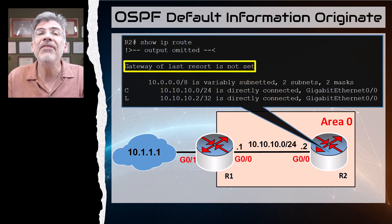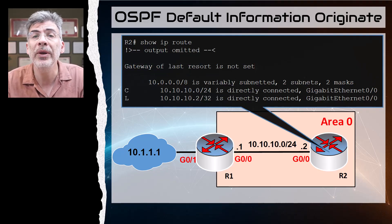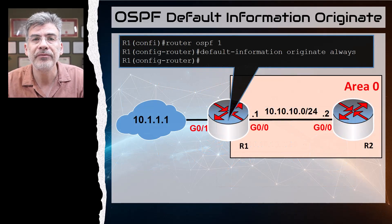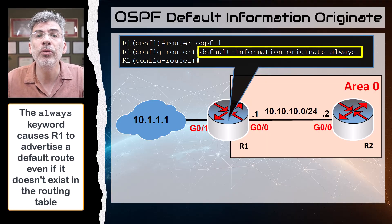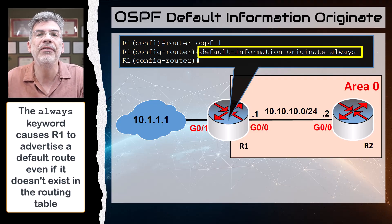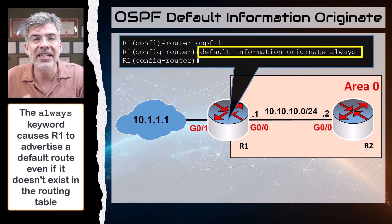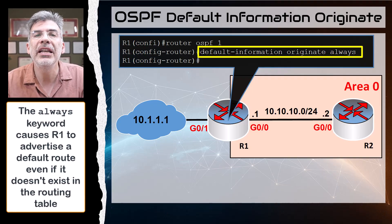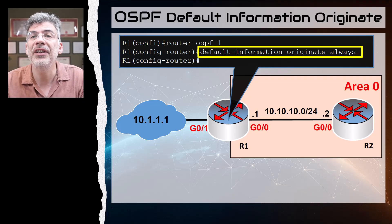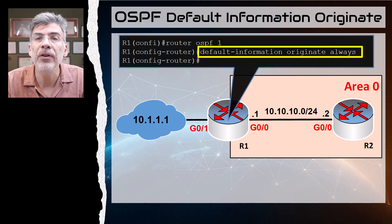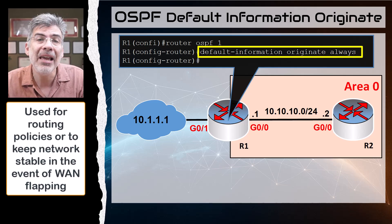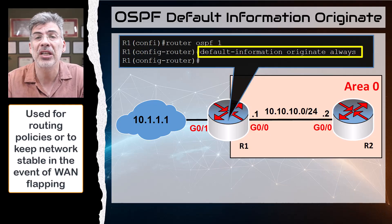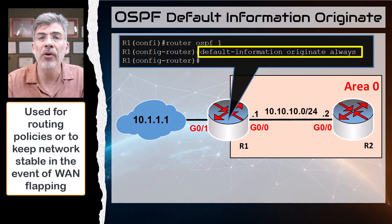However, there is a way to force OSPF to advertise R1 as the next hop for the default route even if R1 doesn't have a default route in its routing table. You can do this using the always keyword at the end of the command. With this keyword, the OSPF router will advertise itself as the default gateway even without a default route in its routing table. This is not as common a configuration, but it can be useful when specific routing policies are in place or to keep the network stable when the WAN link flaps occasionally.